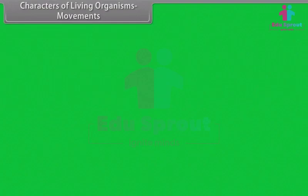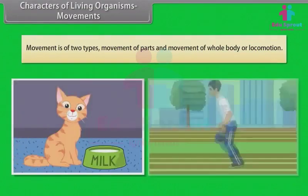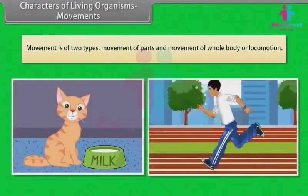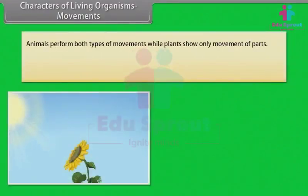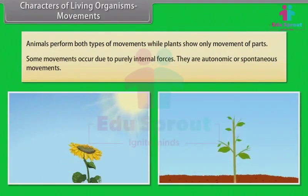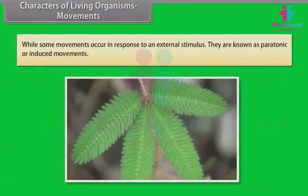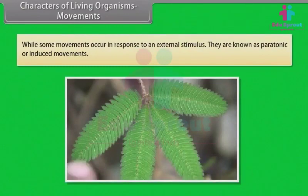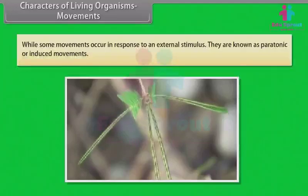Movement is of two types: movement of parts and movement of whole body or locomotion. Animals perform both types of movements while plants show only movement of parts. Some movements occur due to purely internal forces. They are autonomic or spontaneous movements. While some movements occur in response to an external stimulus, they are known as paratonic or induced movements.